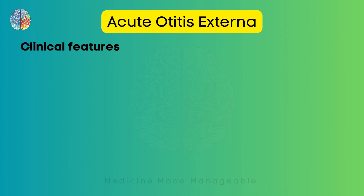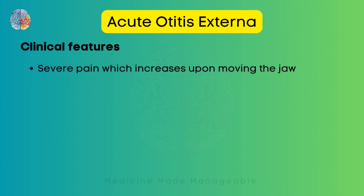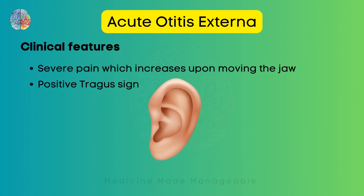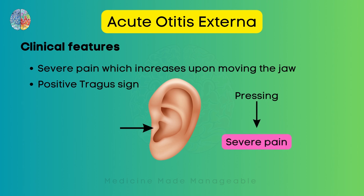The clinical features of AOE include severe pain which increases upon moving the jaw, because the EAC also moves slightly with jaw movement. There is also a positive tragus sign, which is very important. The tragus is a part of the auricle, and upon pressing it the patient experiences severe pain. A positive tragus sign points towards acute otitis externa.